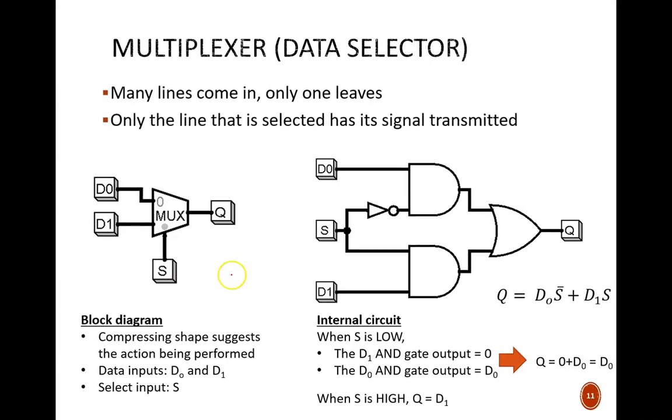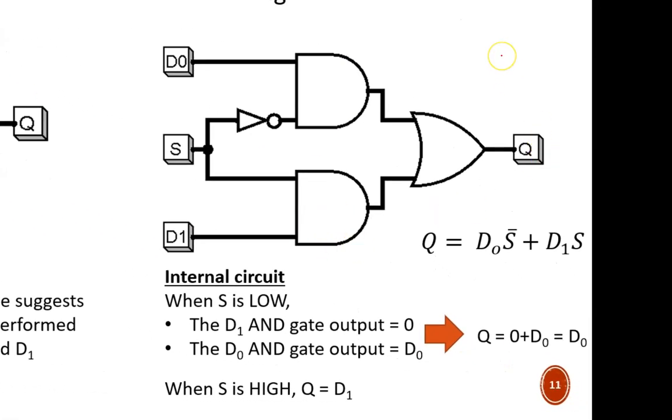It is a fairly simple internal structure that centers on the fact that if one input to an AND gate is 0, then the output of that AND gate is 0, regardless of what the other inputs are. Notice how the select input feeds into two AND gates, with one line being complemented and the other not.